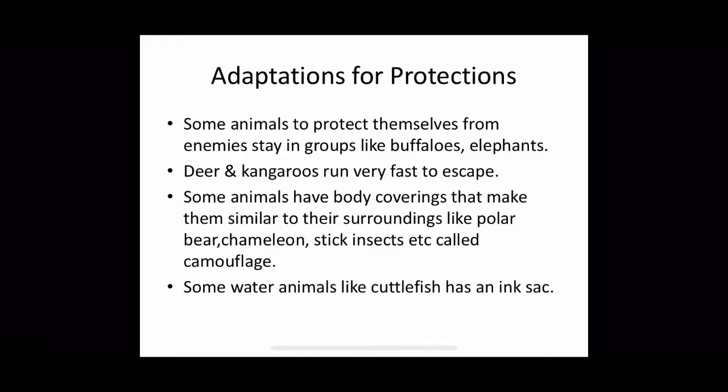Now, adaptations for protection. Some animals protect themselves from enemies by staying in groups, like buffaloes and elephants. Deer and kangaroos run very fast to escape. Some animals have body coverings that make them similar to their surroundings — like polar bear, chameleons, stick insects, etc. — and this is called camouflage.